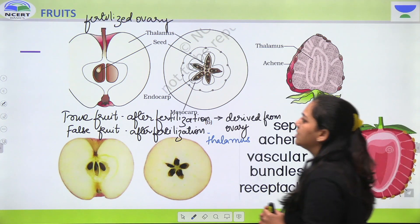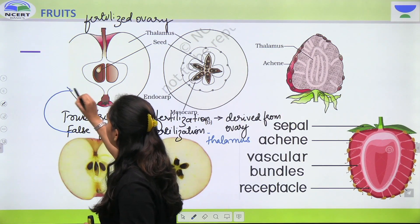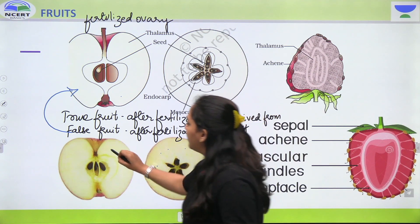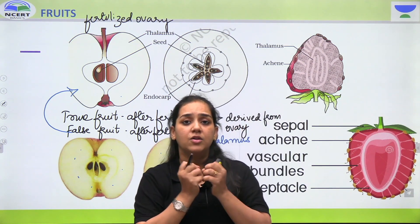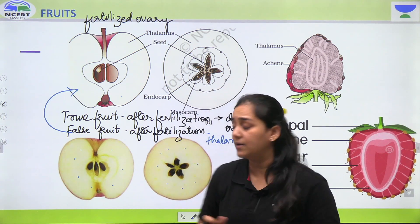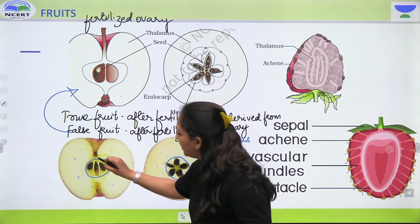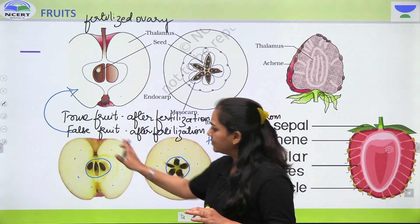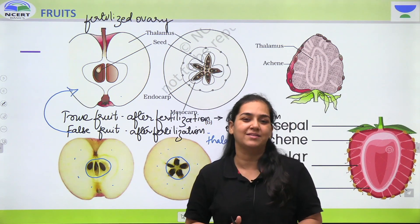Toh humare paas kuch examples hai. Pehla example — apple — yeh aata hai false fruit ke andar. Jo yeh portion hai jo hum khate hai, yeh actually thalamus hai — yeh flower ka thalamus hai — jo after fertilization swollen ho jata hai and that is going to be the edible part. Toh jo actual fruit hai yeh particular part hai jo hum log khate nahi hai — we just cut it off and throw it away. We eat the portion around it which is derived from the thalamus or the receptacle.